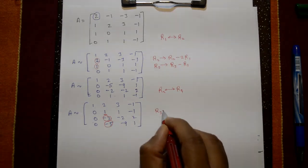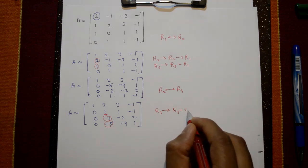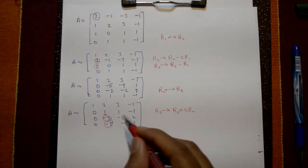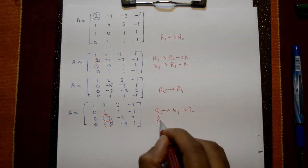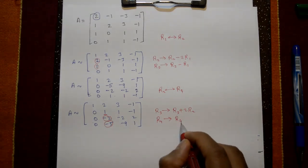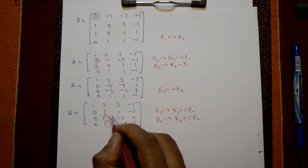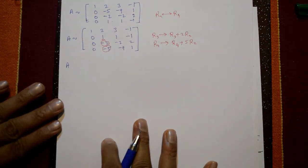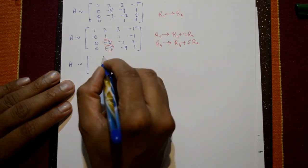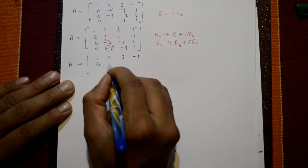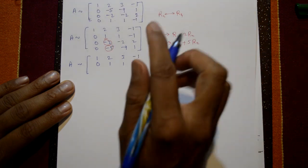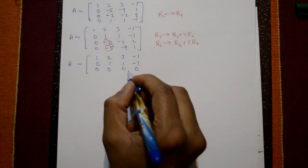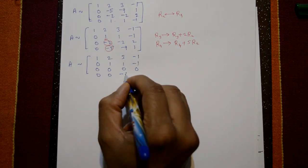We apply R3 = R3 + 2R2 and R4 = R4 + 5R2, both using the second row. First and second rows stay the same. Using these operations we compute the new third and fourth rows.